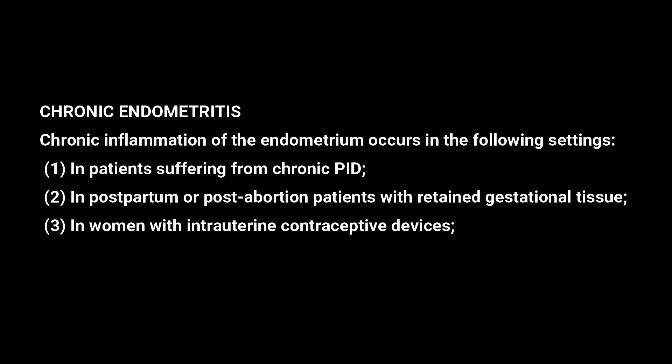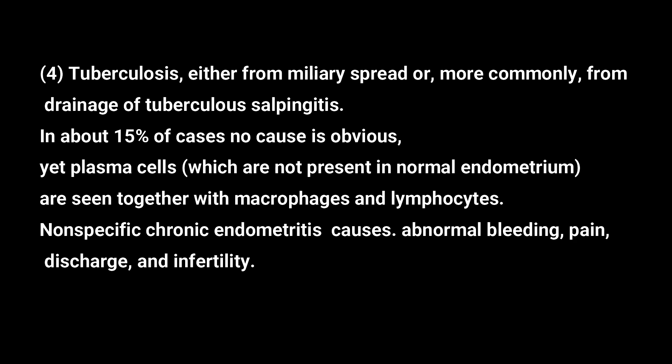Chronic endometritis is inflammation of the endometrium occurring in various conditions. The causes include: patients suffering from chronic pelvic inflammatory disease; postpartum or post-abortion patients with retained products of conception; women with intrauterine contraceptive devices; and tuberculosis, either via miliary spread or more commonly from drainage of tuberculous salpingitis. In about 15% of cases, there is no obvious cause, but plasma cells are present along with macrophages and lymphocytes in the stroma.